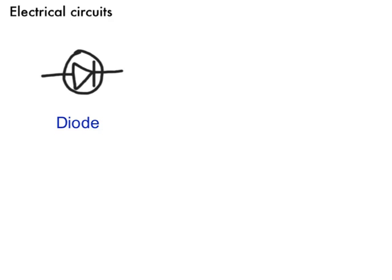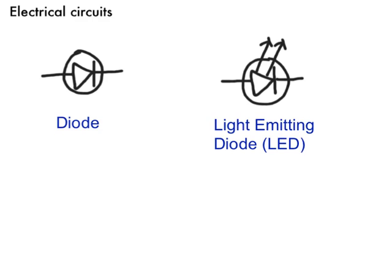There's another type of diode we might come across here, which is this one, and you can see it's the same symbol but this time with arrows coming out from it, this is what we call a light emitting diode, you might have heard it called an LED before, so that is a diode that emits light when the current passes through it.